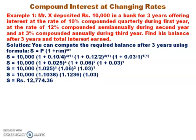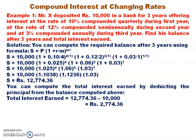When you solve this equation completely, you get S equals rupees 12,774.36, which is the sum after three years. The total interest earned is found by deducting the principal from this balance: total interest equals rupees 12,774.36 minus 10,000, which comes to rupees 2,774.36.